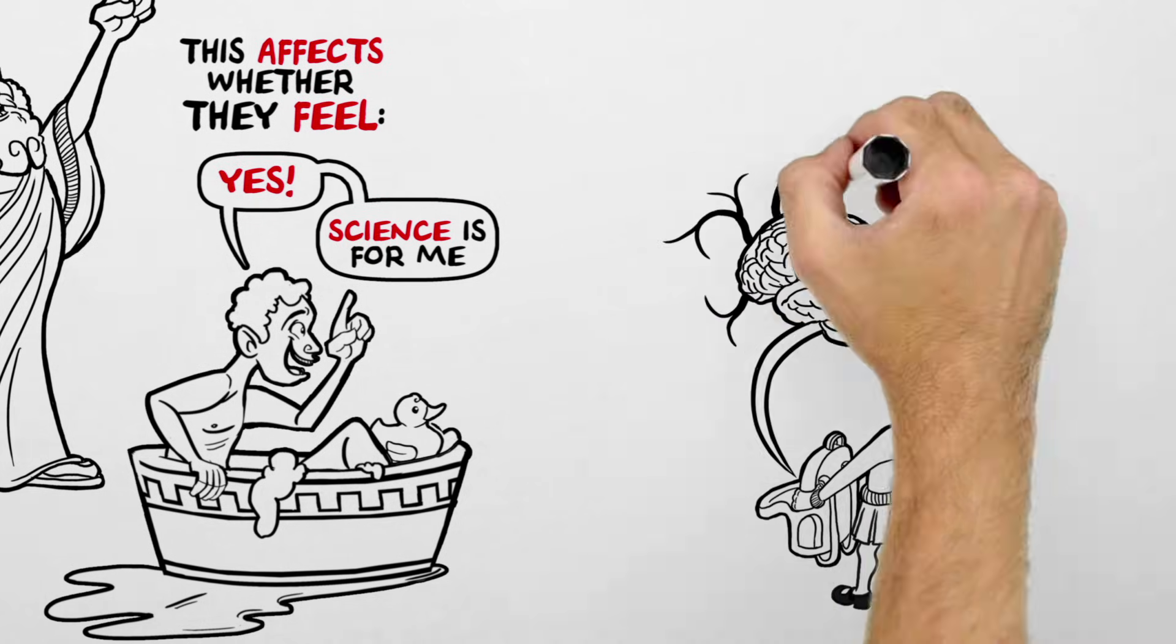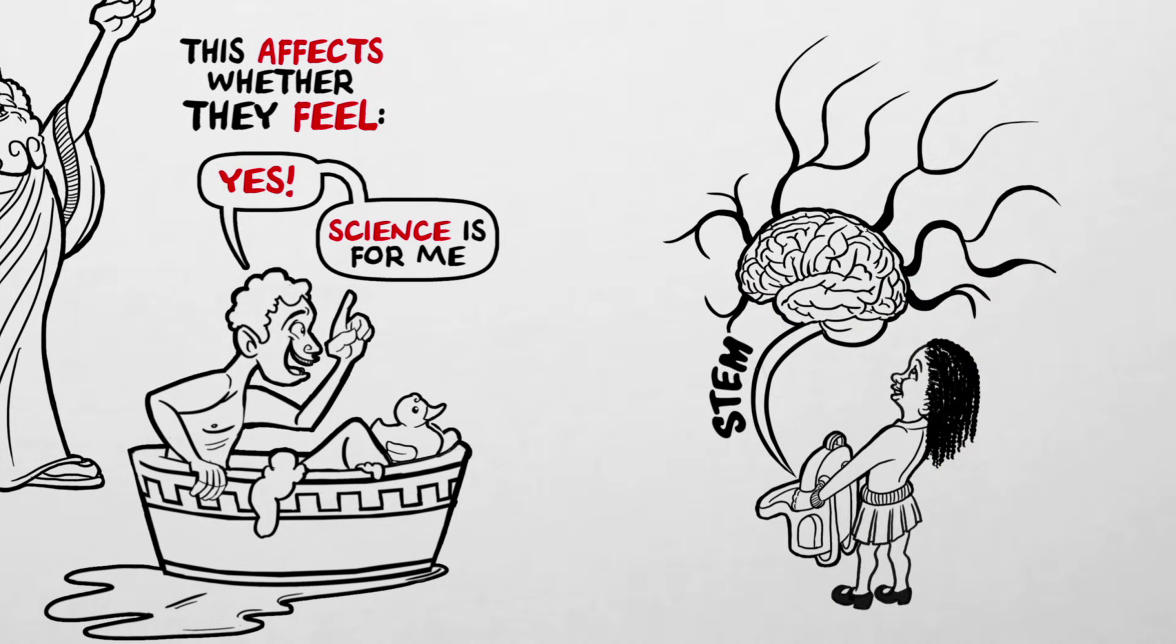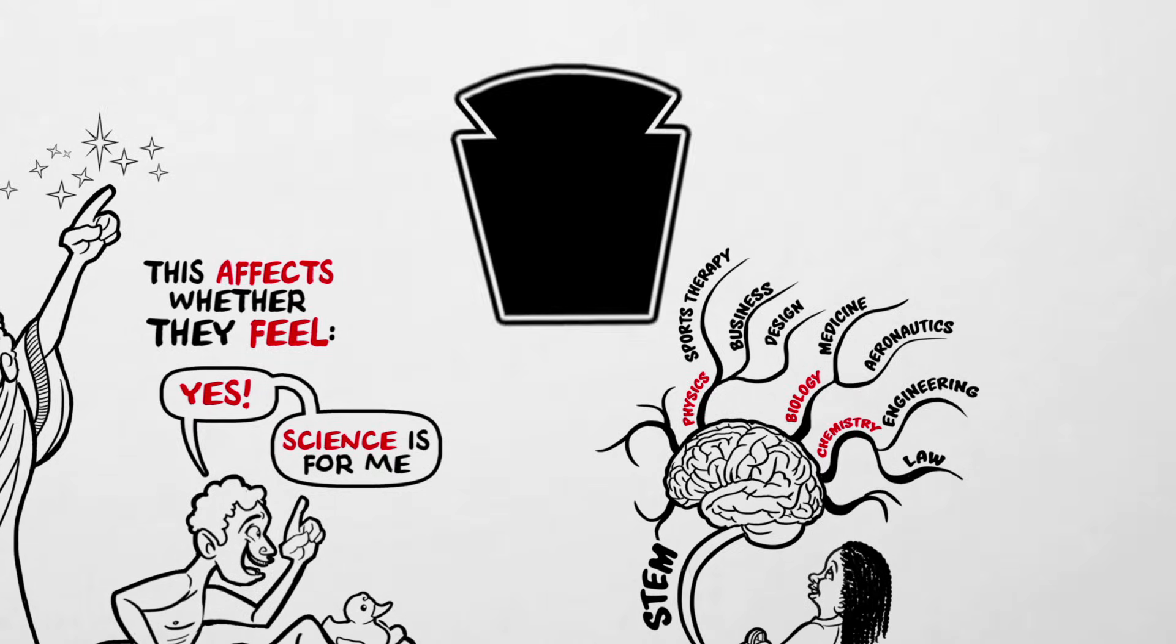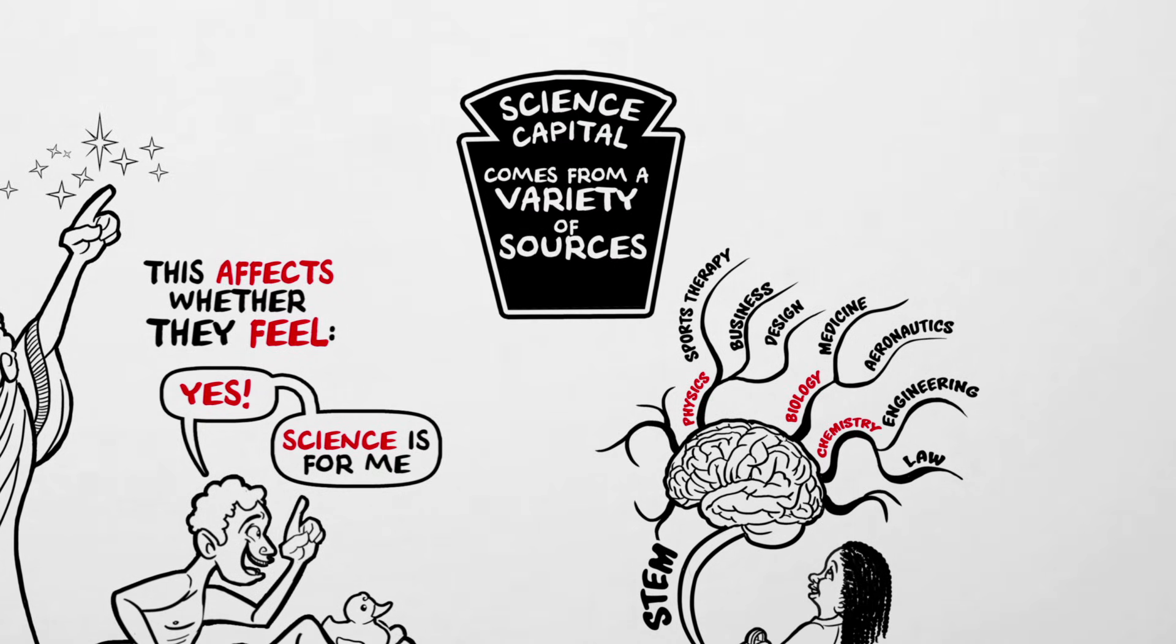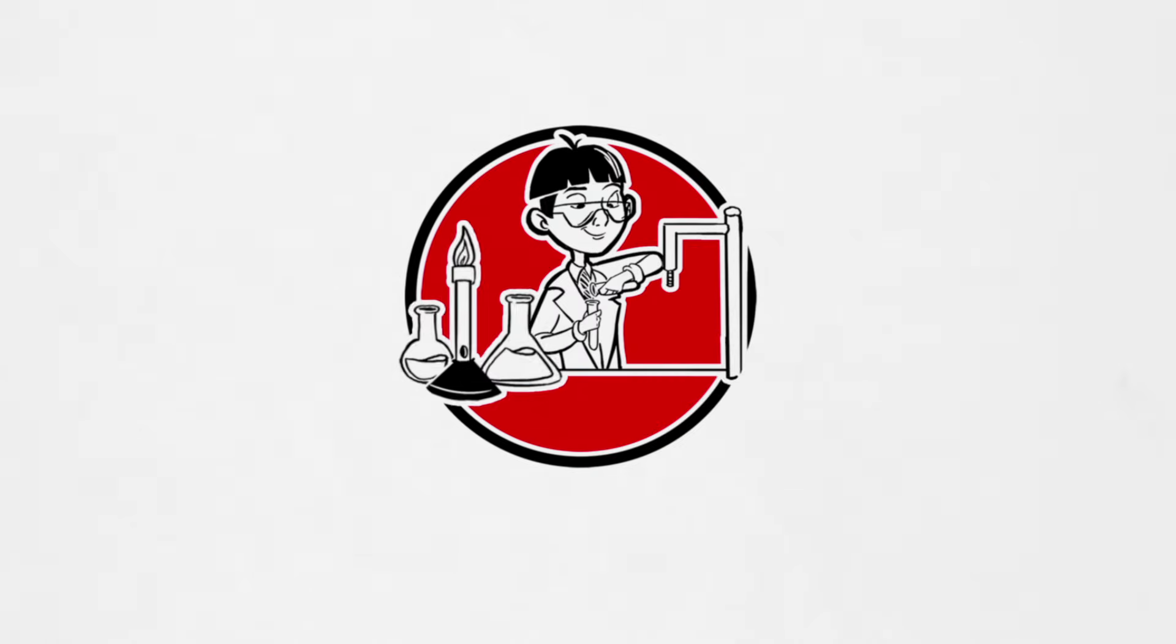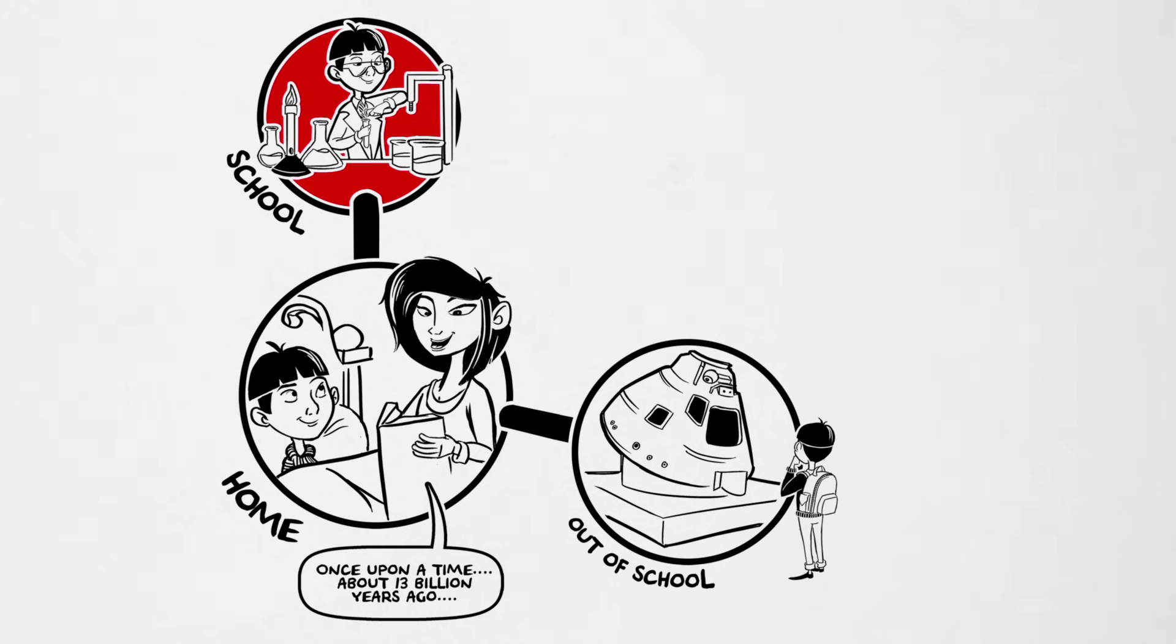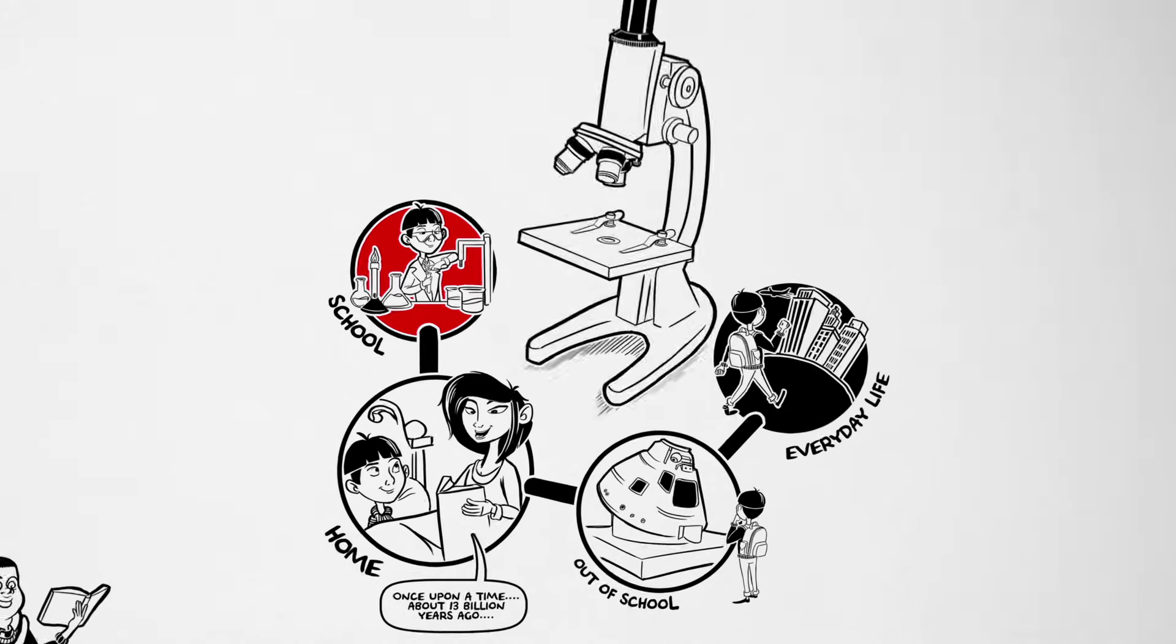Our research shows that the more science capital a child has, the more likely they are to follow STEM subjects. Science capital comes from a variety of sources, including school, home and family, out of school science learning, and the things people experience in their everyday lives.